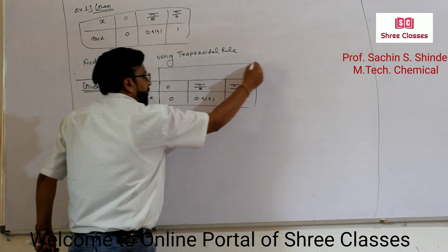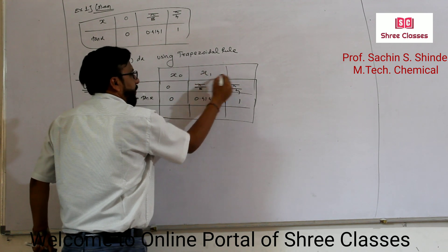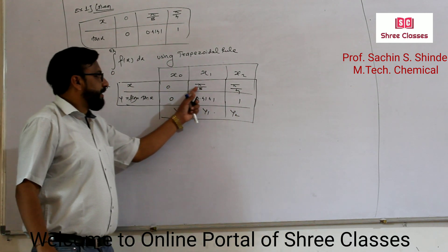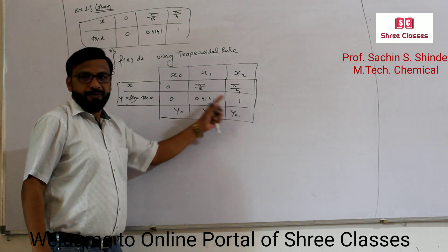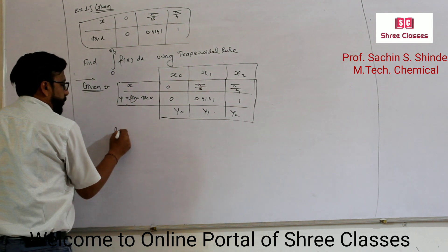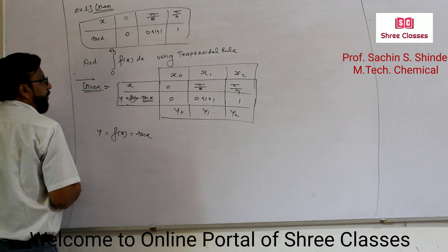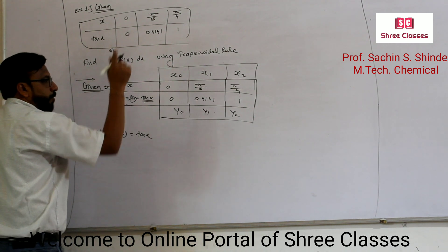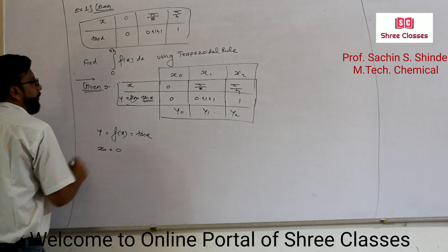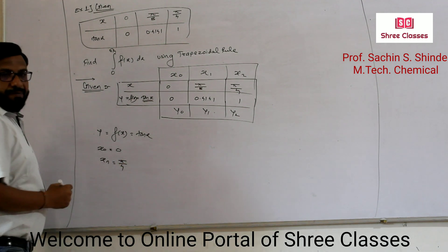From this table we can find the values of x0, x1, x2, y0, y1, and y2. x0 = 0, x1 = π/8, x2 = π/4. y0 = 0, y1 = 0.4141, y2 = 1. We can correlate this to our formula. The lower limit x0 is equal to 0, and the upper limit xn = x2 = π/4.